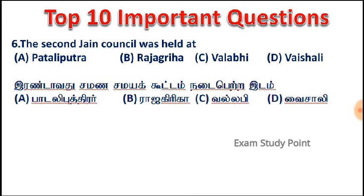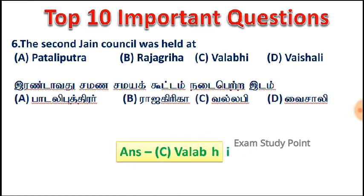Absent E: Pataliputhra. Absent B: Raja Griha. Absent C: Vallabee. Absent D: Vaisali. This is about where the second Jain assembly meeting was held. The correct answer is Absent C, Vallabee — the second Samana assembly meeting was held at Vallabee.